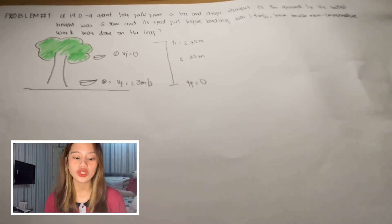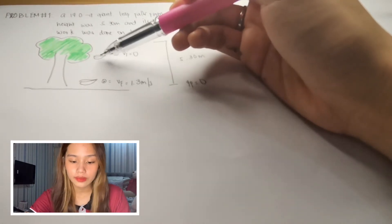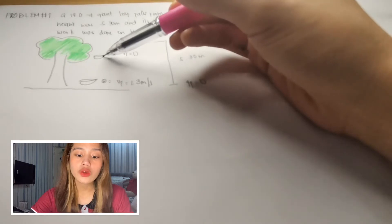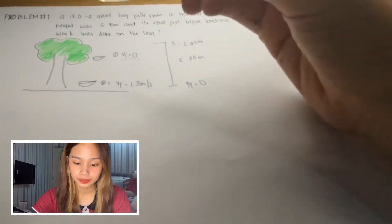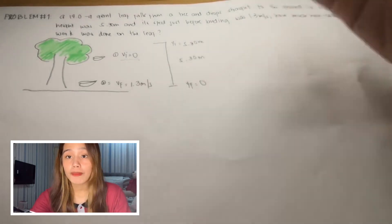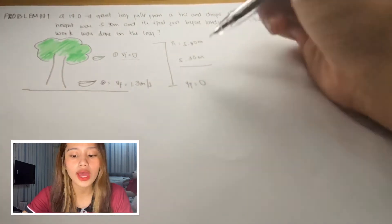So as you can see, I already drew a figure here. So let's say this is our tree and this is the giant leaf when it fell. So this is the initial velocity of our leaf which is 0. And its final velocity before it landed on the ground was 1.3 meters per second.